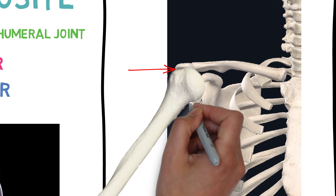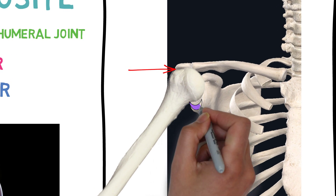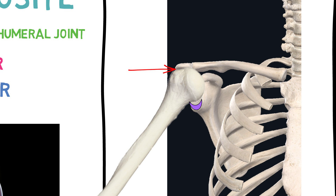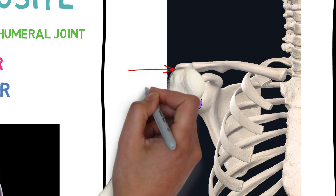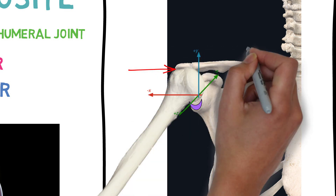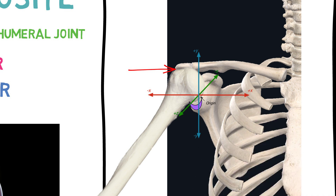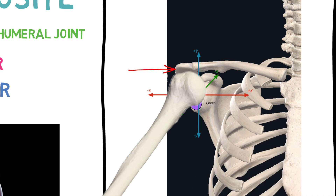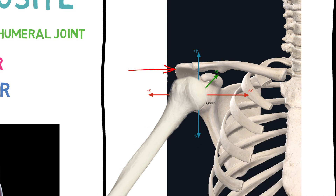Now, take a look at the space around the inferior portion of the glenoid. The bones have to be congruent in order to keep the axis of rotation centered. So, to keep the bones aligned, the humeral head has to perform a conjunct inferior glide. There you go.